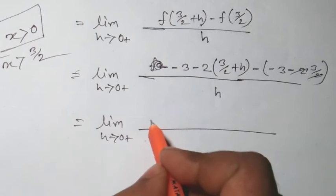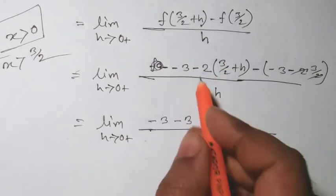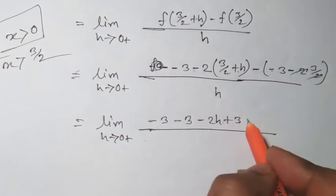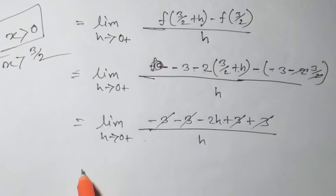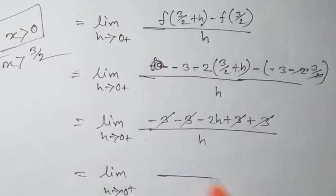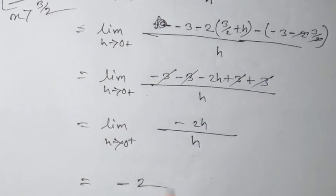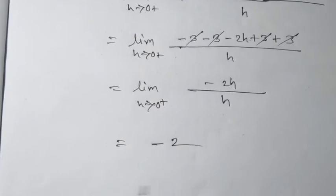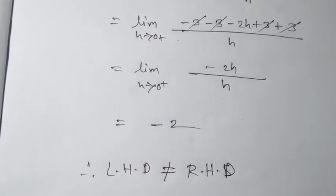Calculating: -3 - 2(3/2 + h) minus (-3 - 2(3/2)), divided by h. This gives -3 - 2h plus 3, which simplifies to -2h plus 3 minus 3, giving -2h divided by h. So limit h tends to 0 plus gives minus 2. Therefore the right-hand derivative equals minus 2, and we have left-hand derivative not equal to the right-hand derivative, so the function is not differentiable at x = 3/2.